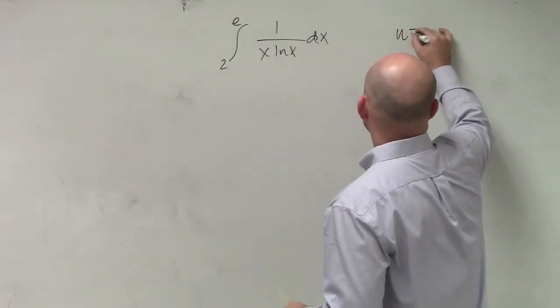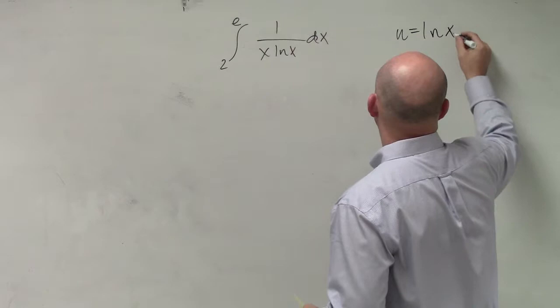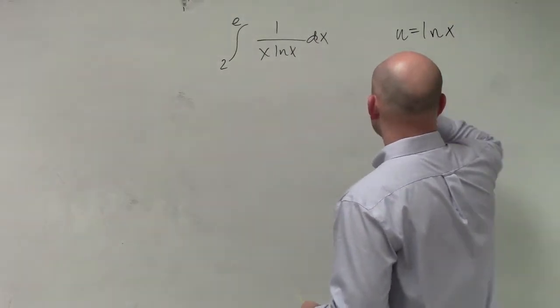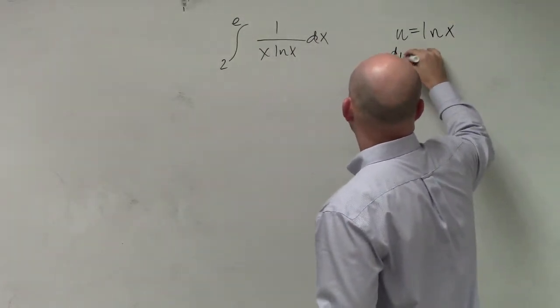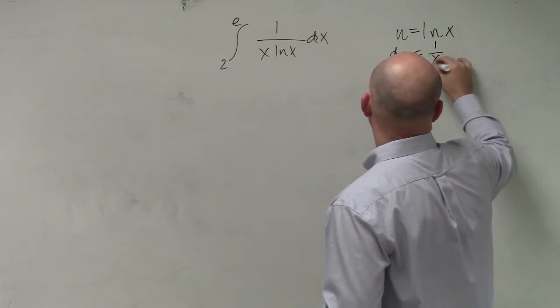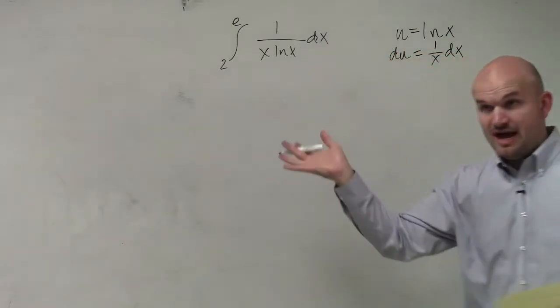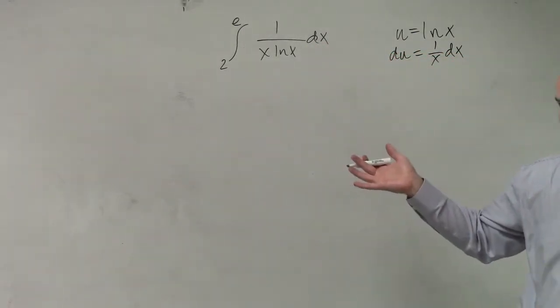but we want to go ahead and look at our u substitution. So let's make u equals ln of x. And therefore, if I want to do du, that's going to be 1 over x dx, which I have in this case. So that's good.